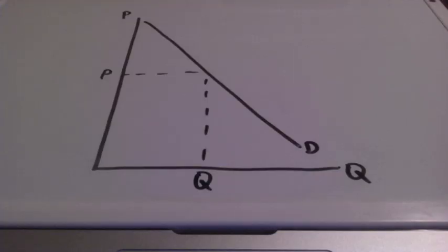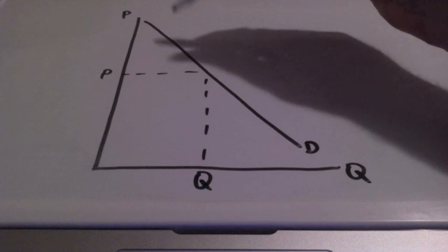We just discussed that the demand curve is downward sloping because there is an inverse relationship between price and quantity. However, there is a difference between a change in quantity demanded and an overall change in demand. The key from the previous examples, if there is a change in price, meaning if price is going up, quantity demanded will go down. If prices go down, quantity demanded will increase. All we are doing is moving along this demand curve.